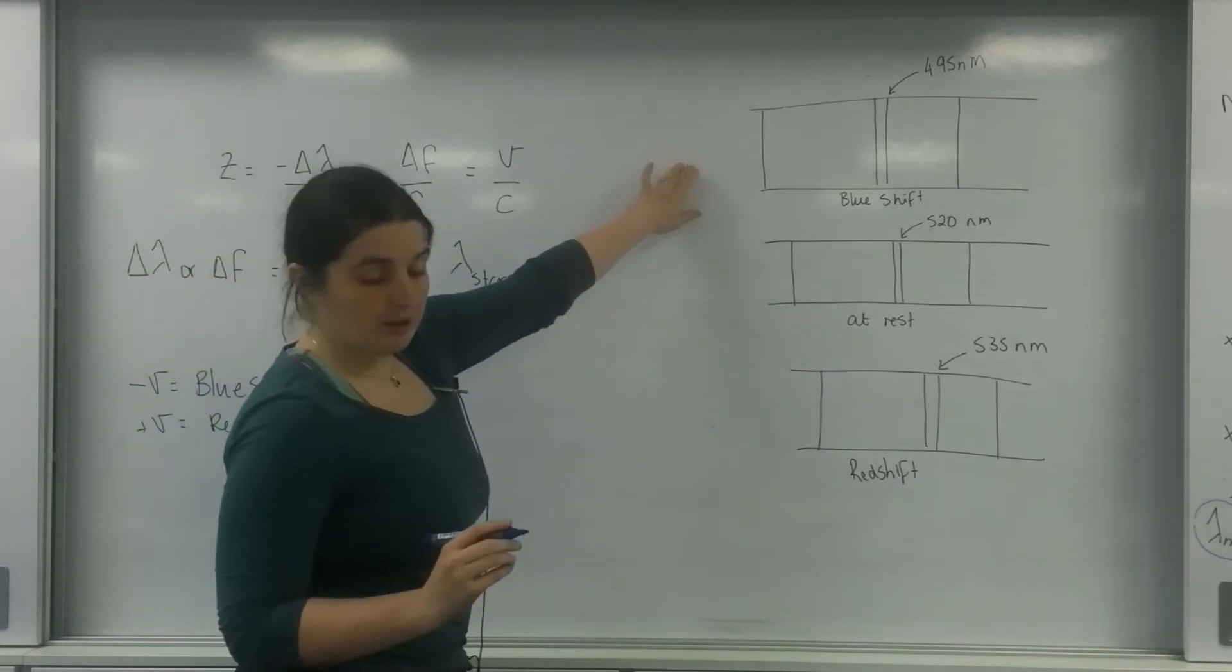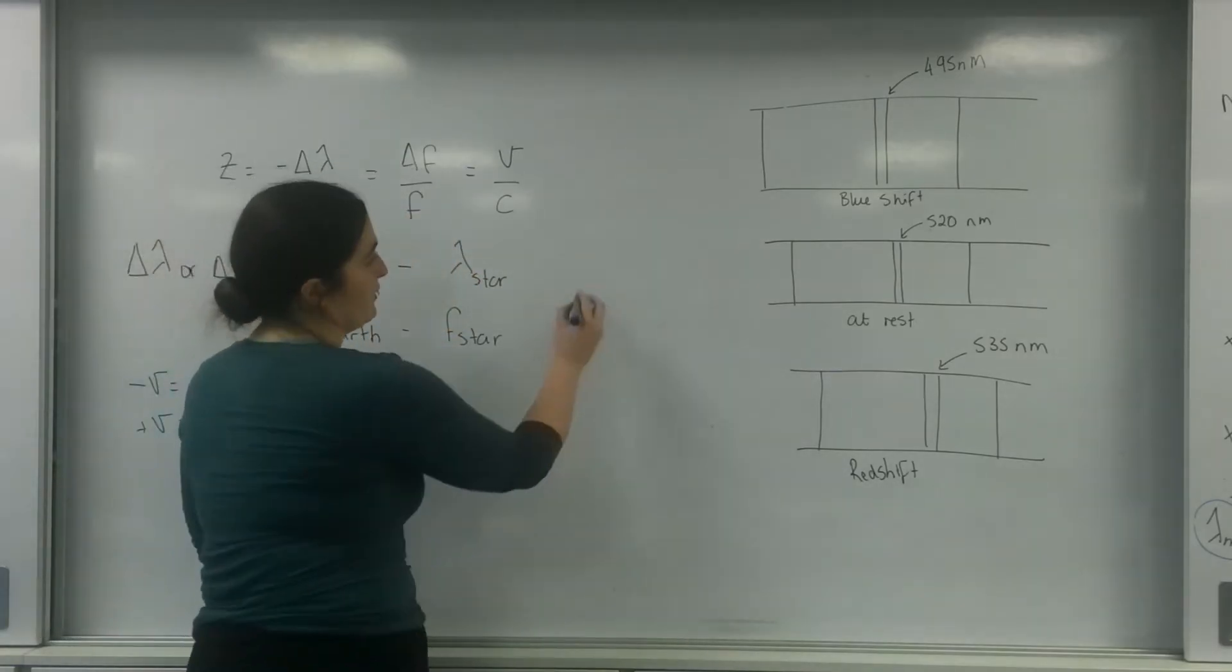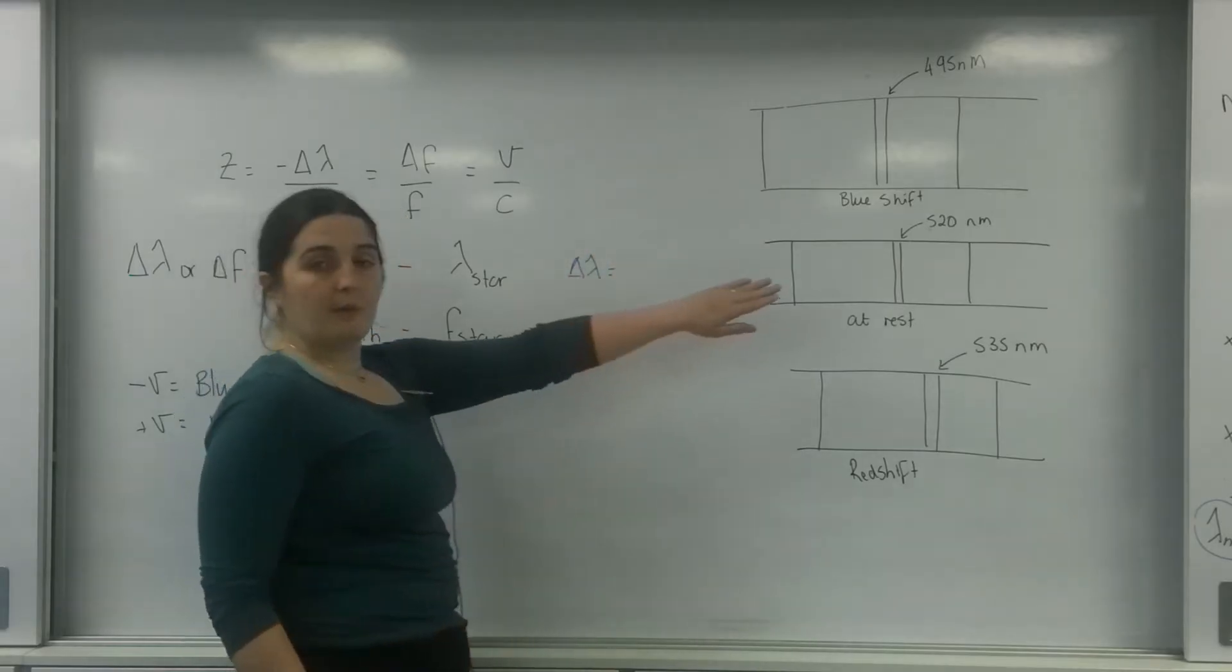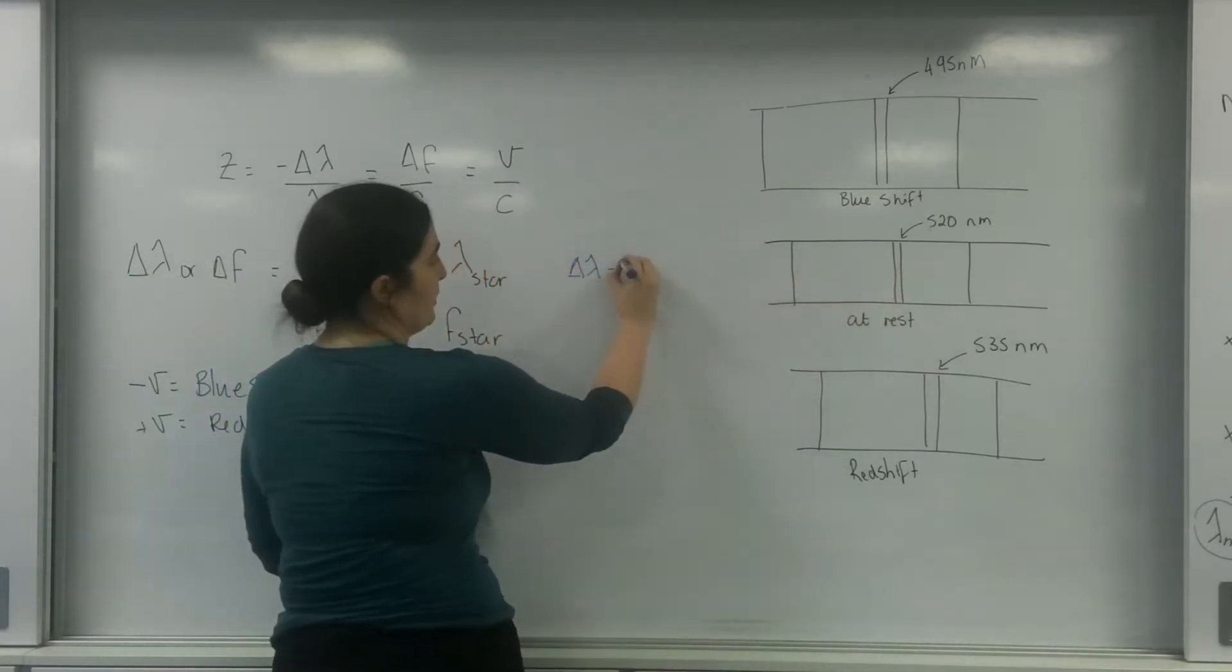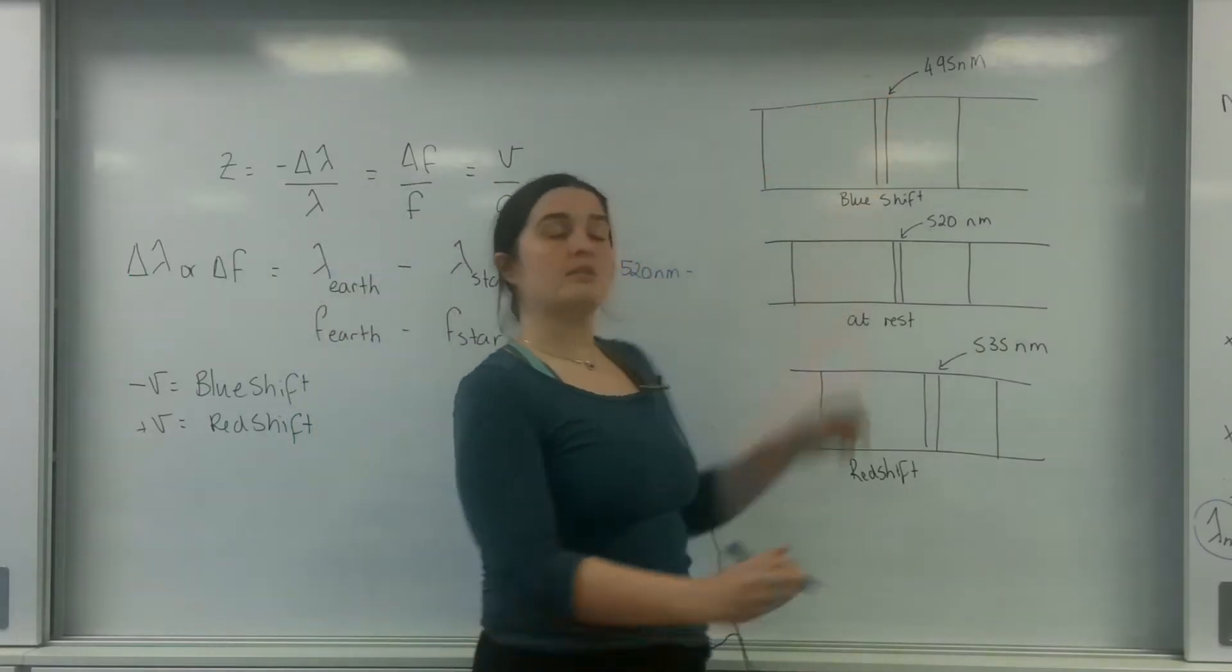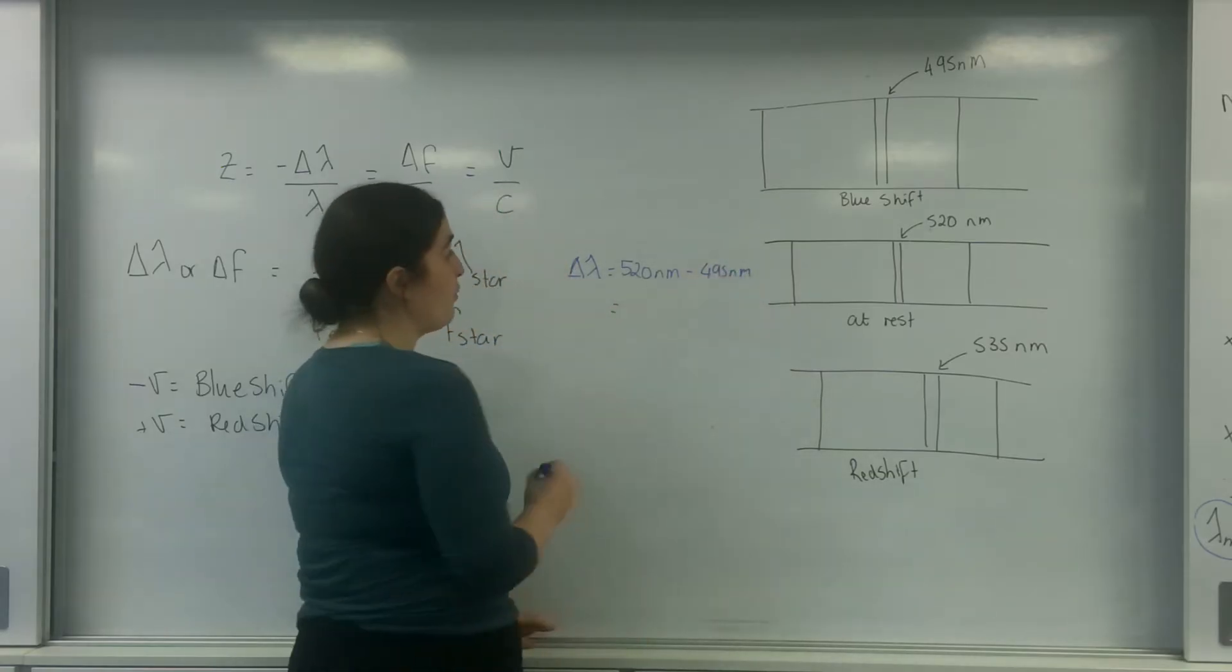I'm going to do the blue shifting one. And I'm going to look at the change in wavelength. So the change in wavelength is the one that I would have at Earth, which is 520 nanometers, minus the one that I would have from the star, which is 495 nanometers. So that is a change in wavelength.